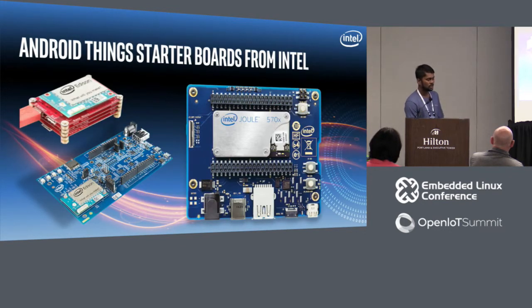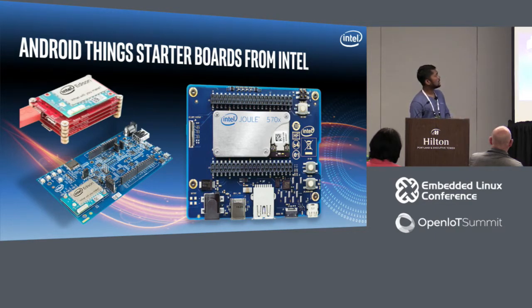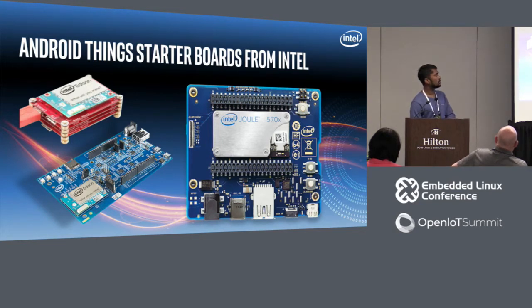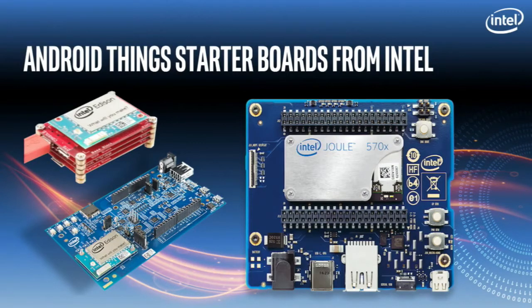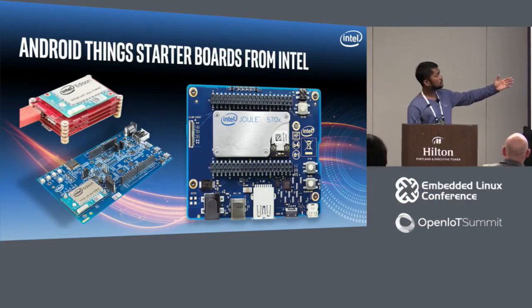Android Things was released back in November last year. It's a developer preview and three boards made the cut: Intel's Edison, Raspberry Pi 3, and NXP's Pico and Argon. Intel's Edison is available on three different kinds of boards: the Arduino, SparkFun blocks, and Mini Breakout — I have those boards here. Two weeks ago, DP2 came out and Joule was released at the same time. It is the most powerful of the lot, mainly focused for autonomous robots and IT applications that require edge processing. Starter boards are boards with GPIOs and buses exposed so that you can connect sensors and actuators and communicate with them.